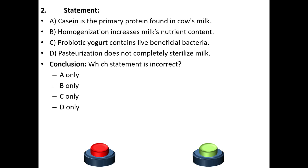Next statement. Casein is the primary protein found in cow's milk. Homogenization increases milk's nutrient content. Probiotic yogurt contains live beneficial bacteria. Pasteurization does not completely sterilize milk. Which statement is incorrect?